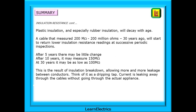And what happens to the plastic insulation with age? Plastic insulation, and especially rubber insulation, will decay over the years. A cable that was measured at 200 mega ohms - 200 million ohms - 30 years ago will start to return lower insulation resistance readings at successive periodic inspections. After 5 years there may be little change. After 10 years it may measure 150 mega ohms. At 30 years it may be as low as 100 mega ohms. This is the result of insulation breakdown allowing more and more leakage between conductors. Think of it as a dripping tap - current is leaking away through the cables without going through the actual appliance.